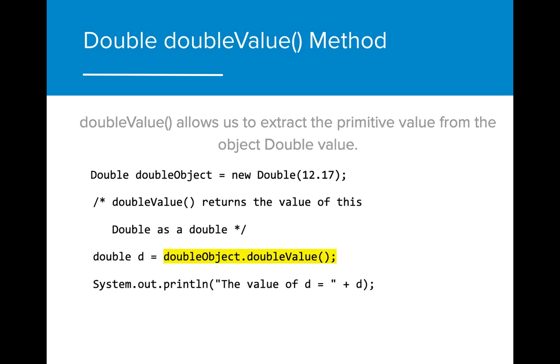A similar method exists for the Double class, where the double value is converted to the primitive type and then can be used as such.